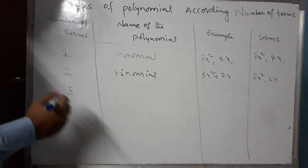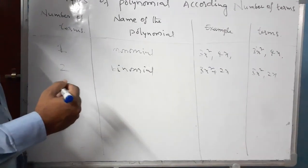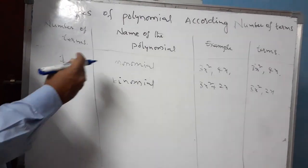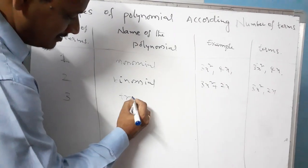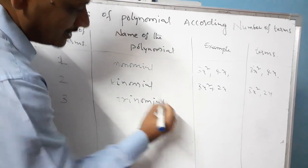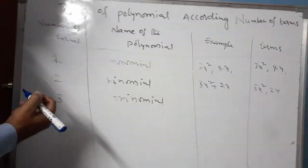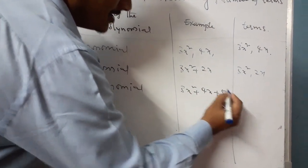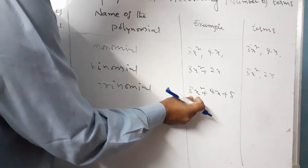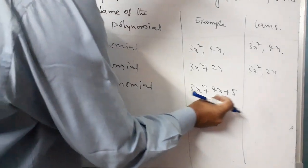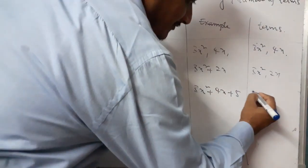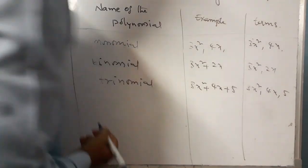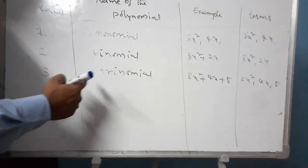If the number of terms is 3, it is called a trinomial. Example: 3x squared plus 4x plus 5. It contains 3 terms: 3x squared is the first term, 4x is another term, and 5 is another term. So if a polynomial contains 3 terms, it is known as a trinomial.